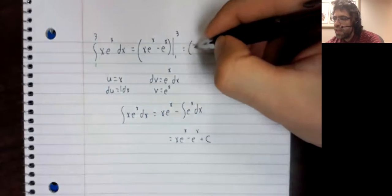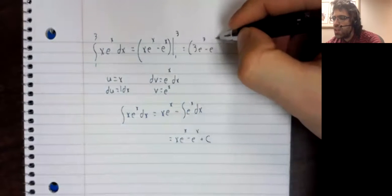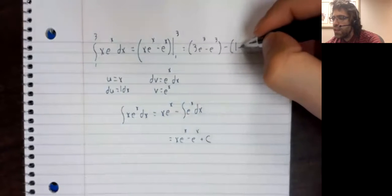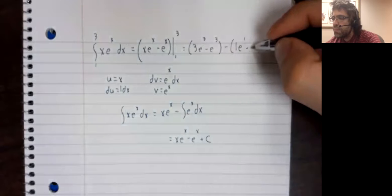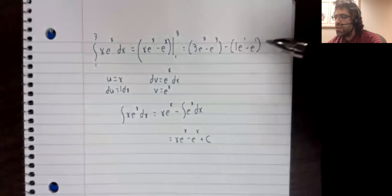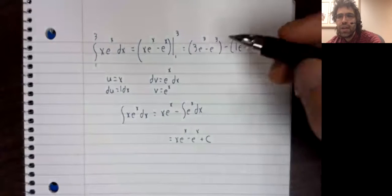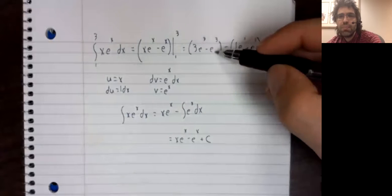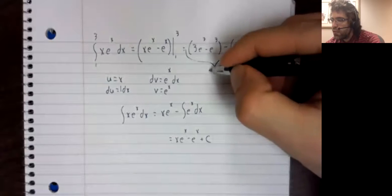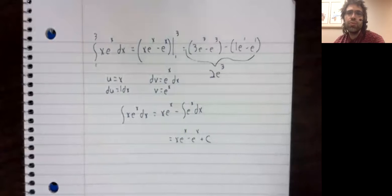And we get three e cubed minus e cubed minus one e to the first minus e to the first. Now this happens to be zero and three e cubed minus one e cubed can be rewritten as two e cubed.